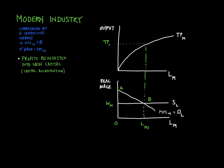As new capital is introduced, the total product curve shifts up and the marginal product of labor increases as well. The modern sector wants to hire more workers. Those workers come from the agricultural sector, and there is a perfectly elastic supply of labor — perfectly elastic because these are surplus workers entering the modern sector. You don't have to pay them any more, because they just keep coming as long as we need them in this industry. And as we add more and more capital, the total product curve keeps shifting up higher and higher, allowing more and more people to be hired in the modern industry.